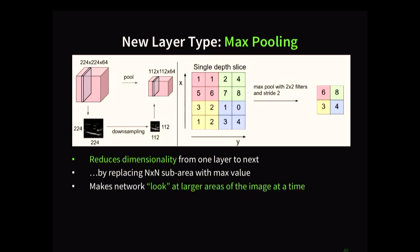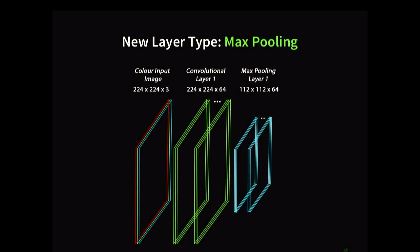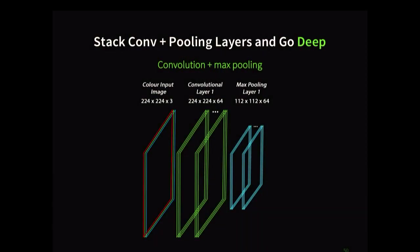And so, really, it's a way of reducing dimensionality from one layer to the next, by replacing each n-by-n sub-area with the max value. And you can think of this as the network looks at larger regions of the image, sort of zooming out. So, instead of looking at the fur, look at the cat, kind of thing. And it also helps reduce overfitting, because we're throwing away information, and therefore helping the network generalize. So, we have our convolutions, and then we'll do this max pooling. And notice, we still have 64 activation maps, but now we've halved both the width and the height.